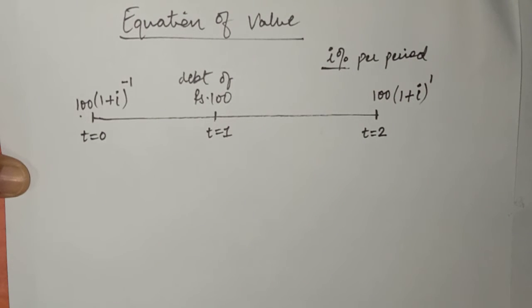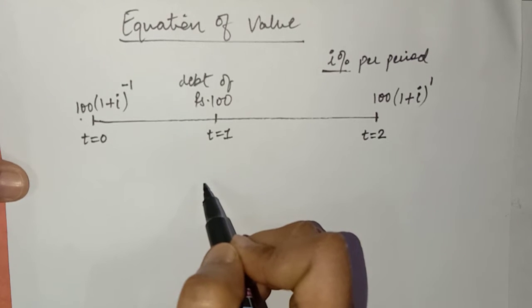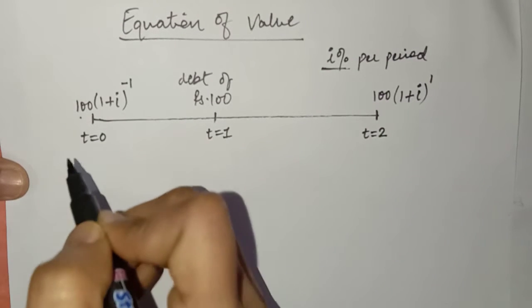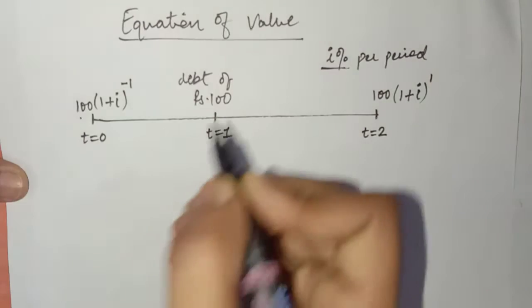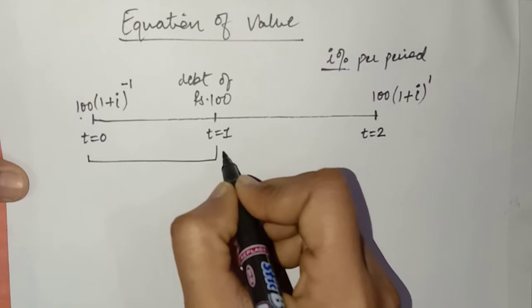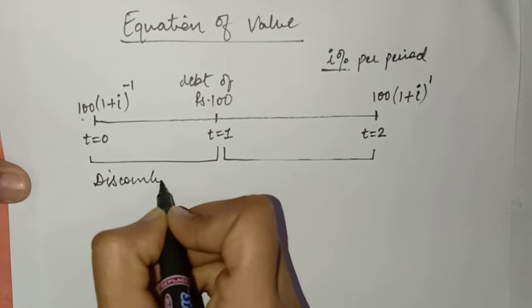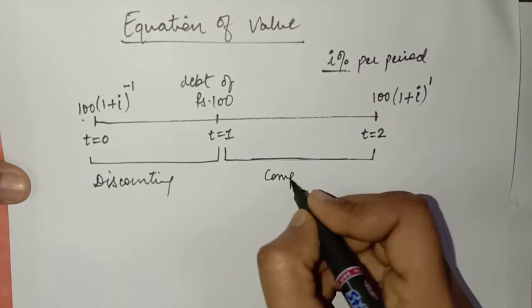The time value of money concept says that money at different points of time cannot be added, subtracted, or compared. So, if we want to compare two values which are at different points of time, we need to bring them to one point of time. When we bring money backward, this concept is known as discounting, and when we bring money forward, this concept is known as compounding.